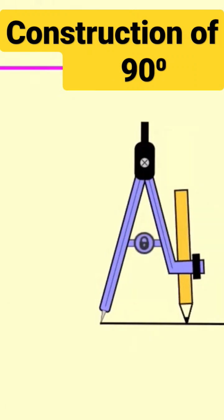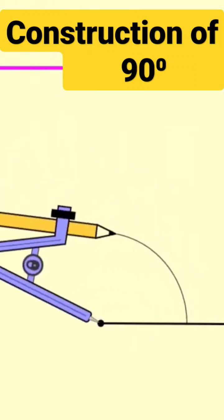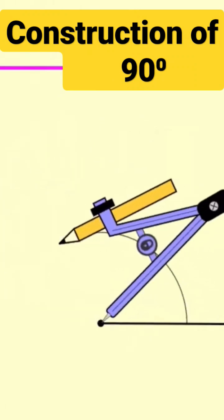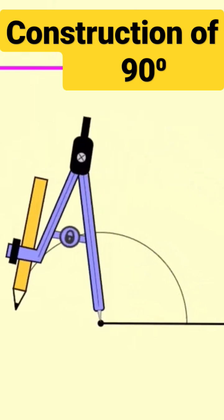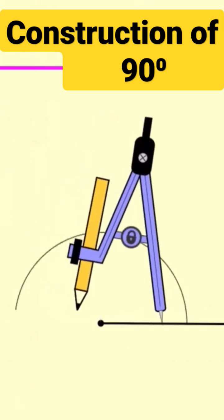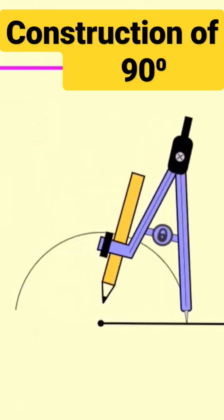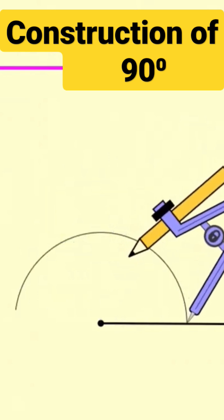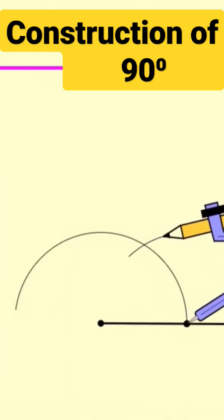Draw an arc intersecting the line segment. From that point, keeping the radius the same, draw another arc — that will give you 60 degrees.